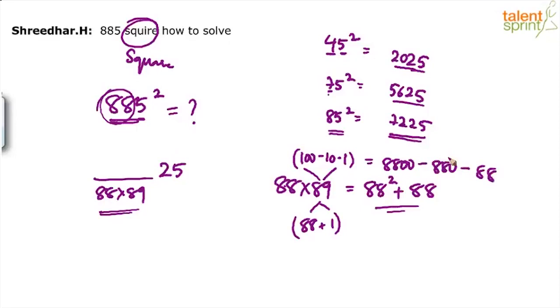So whichever way you like, just do this calculation and put it here. You're done. Or you can take it as 90 minus 1 if you want. 88 into 90 minus 88 into 1.